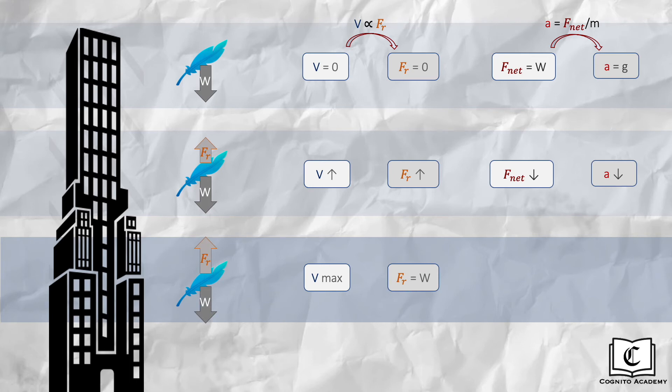Hence, net force on the feather at this point is zero, meaning acceleration is also zero. Velocity now is constant, and we say that the feather has reached terminal velocity, falling at constant velocity.